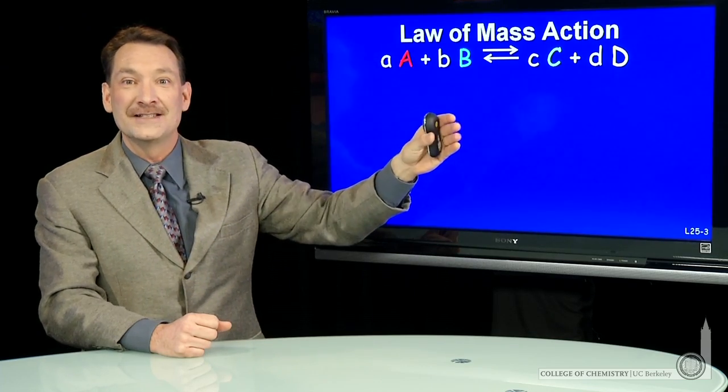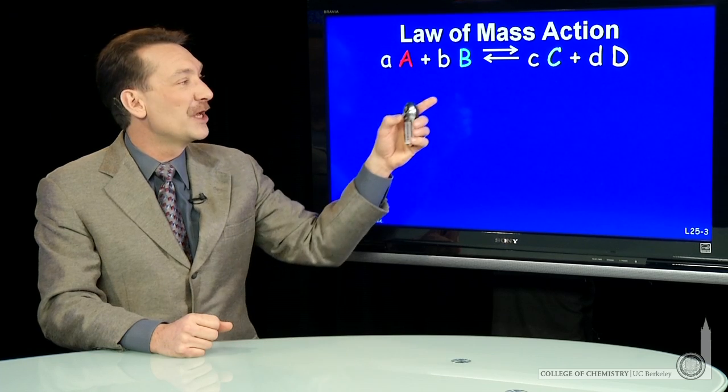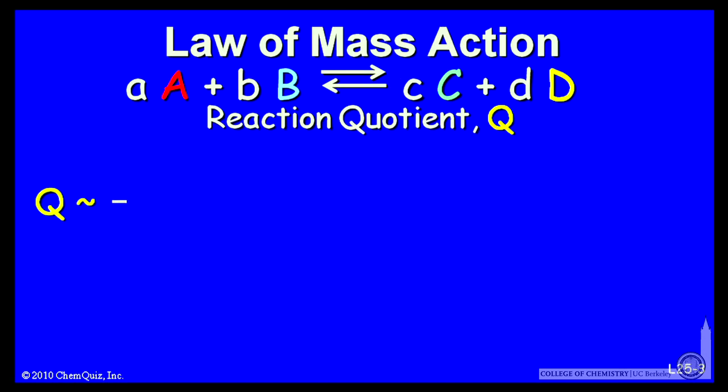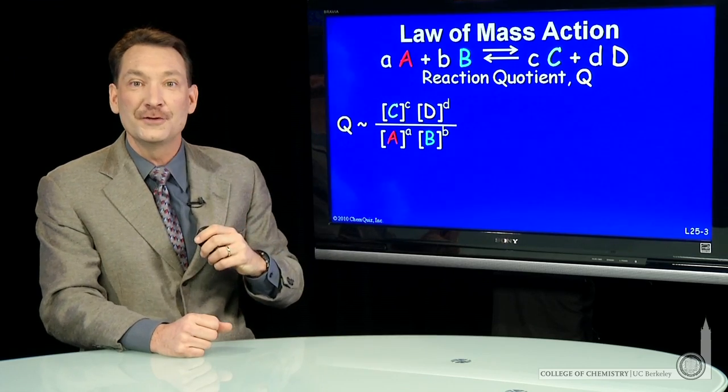As this reaction proceeds, we'd like to track the progress. And we do that by defining something called the reaction quotient. The reaction quotient is the product concentrations over the reactant concentrations. And you can measure them at any time. So Q will change with time. Specifically, I take the concentration of C raised to the stoichiometric coefficient c and D to its stoichiometric coefficient d. Same for the reactants, A concentration to the a power and B concentration to the b power. And I can calculate this value Q at any time.